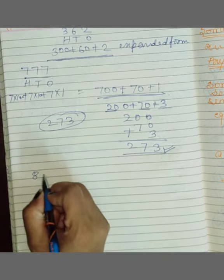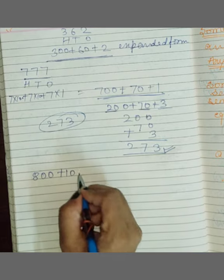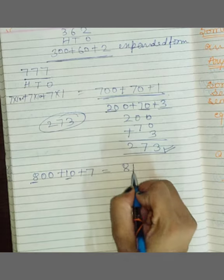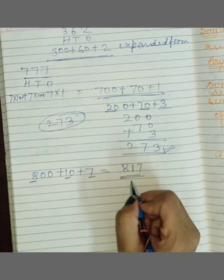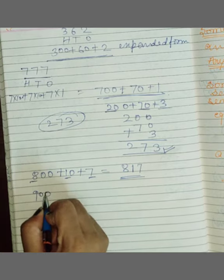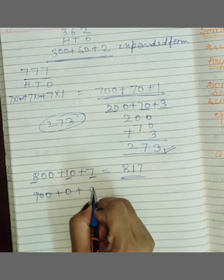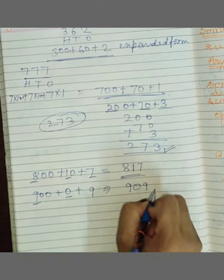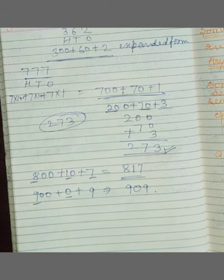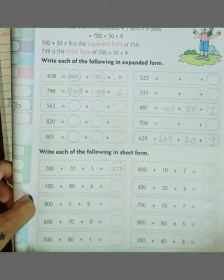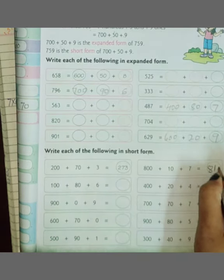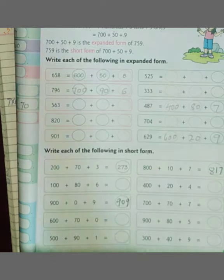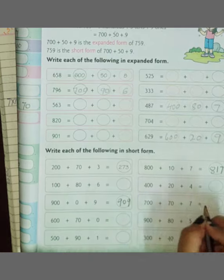Let's see another example. 800 plus 10 plus 7. First letter 8, 10 का first letter 1, then 7. Okay, अब suppose बीच में अगर 0 है तो क्या करेंगे? 900 plus 0 plus 9. So 9, 0 का as it is दो दे रहेंगे 0, then 9. It will become 909. So look here, 817, 909, like this. That's you have to do it. Okay, you take here 777. Rest you will complete in your own book. Okay, do it in your book itself. That's your homework which are left.